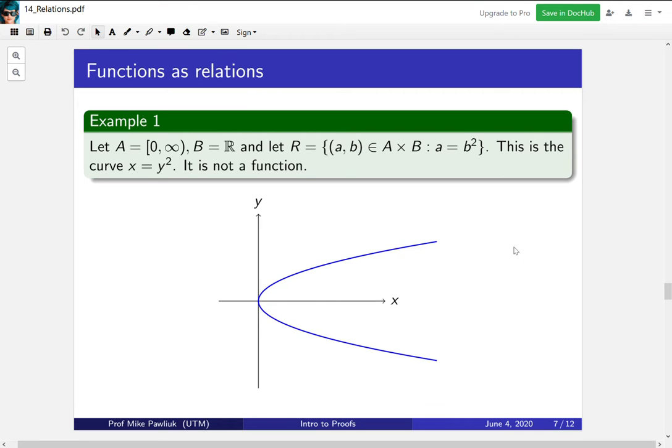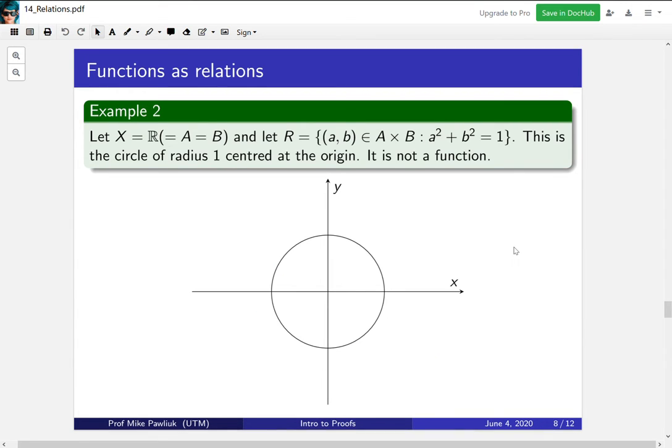Let's look at another example. Let's take X to be the real numbers, so both A and B are equal to X, and the relation R will be all pairs (a,b) where a² + b² equals 1. This is the circle of radius 1 centered at the origin. It is not a function. We can see that because it fails the vertical line test. There is an X that outputs two Ys.